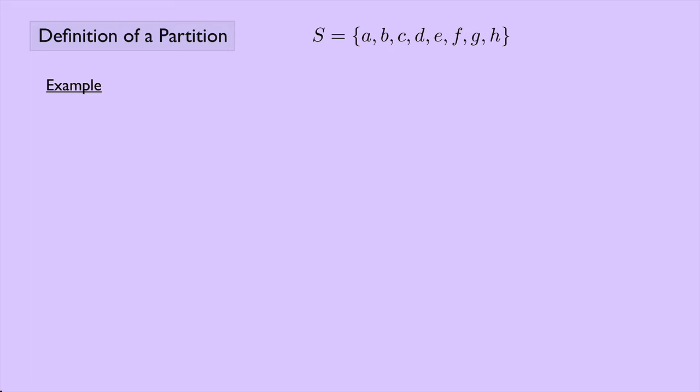And we can make a partition by saying, well, I'll call one of the cells A1. That would be A, B, C, and D. And we could have another cell, A2, which we could call E, F, G, and H. And notice that if you take the union of A1 and A2, that you get S, and that these two cells are disjoint.